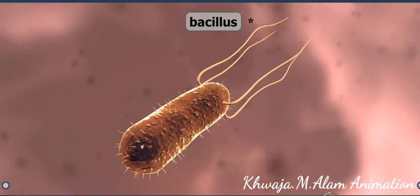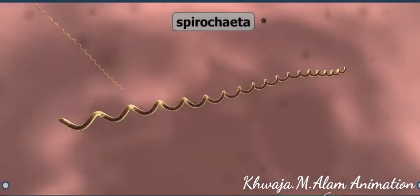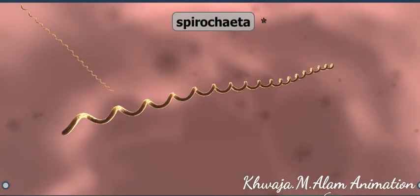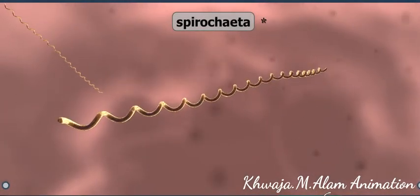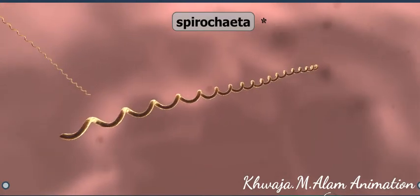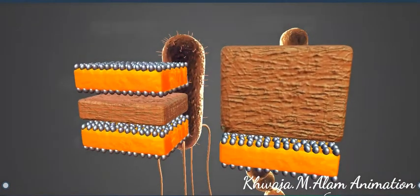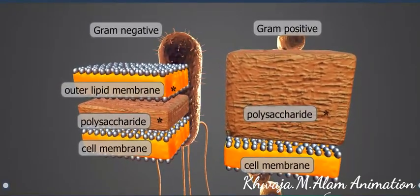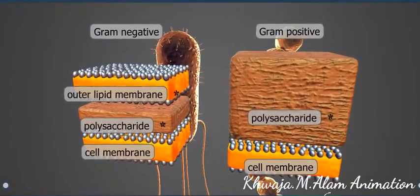Escherichia coli, which is commonly found in the human intestinal system, is also a bacillus. Syphilis, Lyme disease, and leptospirosis are caused by spiral-shaped bacteria. Gram staining is a method of differentiating bacteria into two groups.